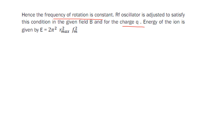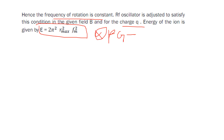The energy of the ion is given by: E = 2π² r²_max f² m. This is an important formula from the exam point of view, especially for PGT and TRB exams.